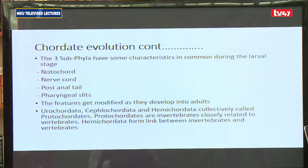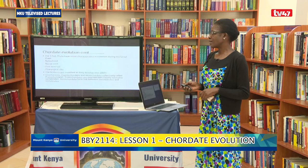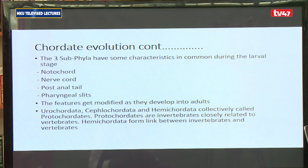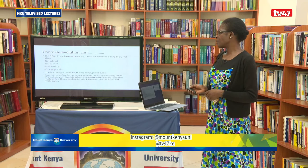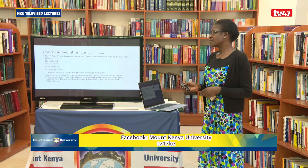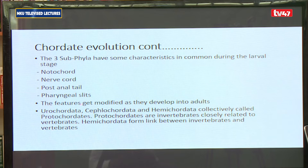In addition to subphylum urochordata and subphylum cephalochordata, another phylum we refer to as hemichordata — these three together are now referred to as protochordates. Where proto means prior to, so by calling them protochordates we mean organisms that exist just before the chordates. The three protocordates tend to be invertebrates, and they tend to be invertebrates that are closely related to the vertebrates.